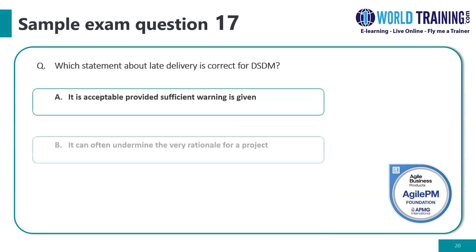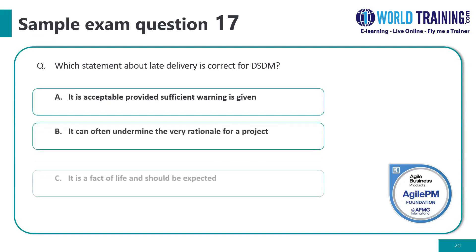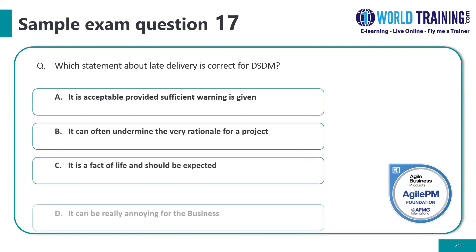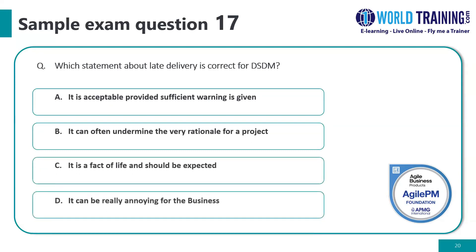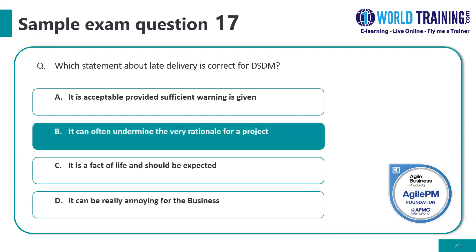Question number seventeen: which statement about delayed delivery is correct for DSDM? The correct answer is B: it can often undermine the very rationale for a project.